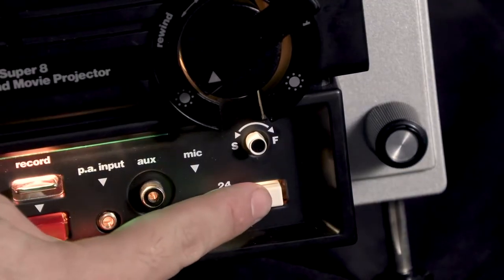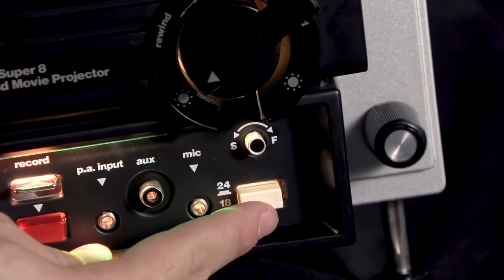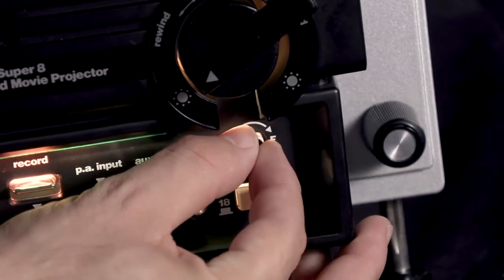Press this white button to adjust the speed from either 24 frames per second or 18 frames per second. This white knob above it will micro-adjust the speed.